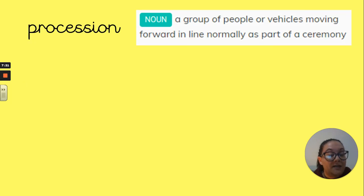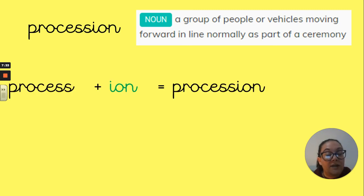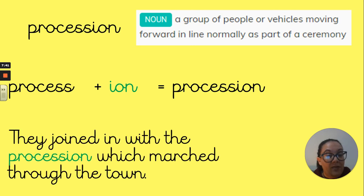Next word: 'procession' — a noun. A group of people or vehicles moving forward in line, normally as part of a ceremony. Our root word is 'process', which has that 's-s' ending, so we're going to add our 'i-o-n' to the end of it to give us the word 'procession'. In a sentence: 'They joined in with the procession which marched through the town.'